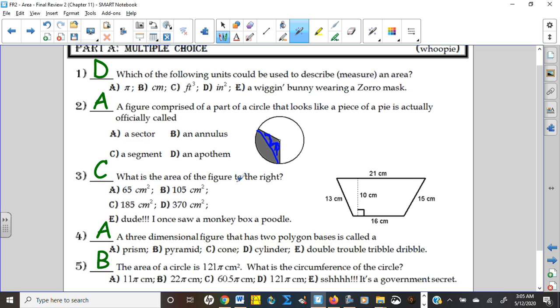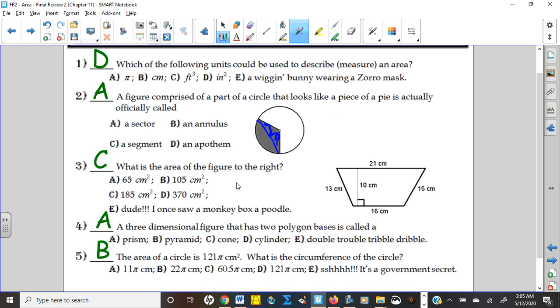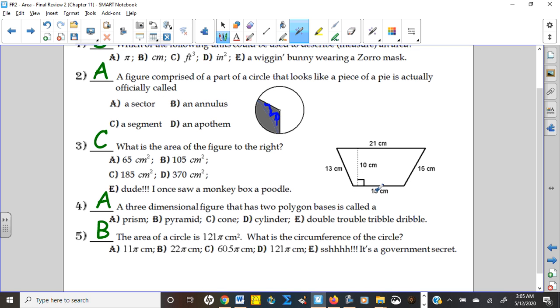Trapezoids are base one plus base two, then multiplied by the height, and then finally divided by two. So 21 plus 16 is 37 times 10 is 370 divided by 2 should be 185.